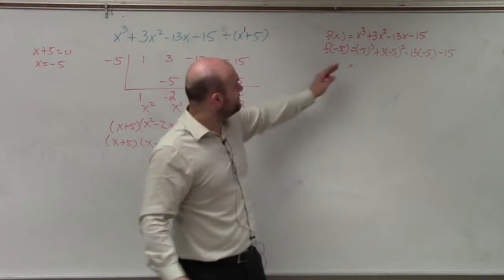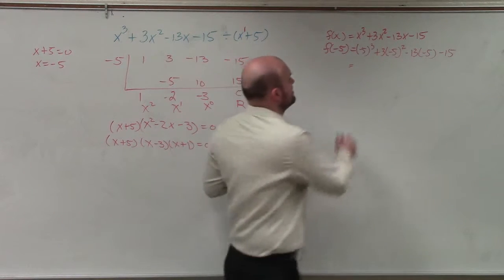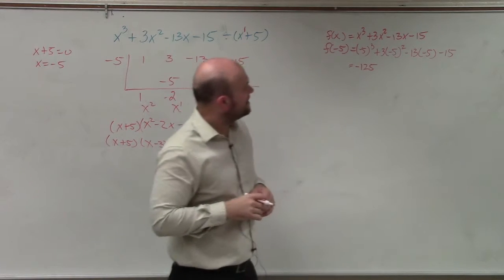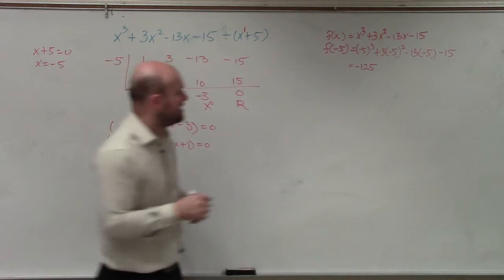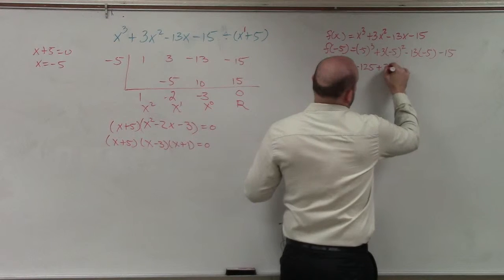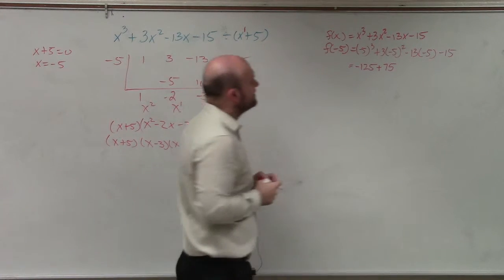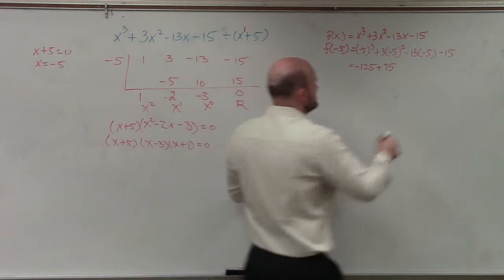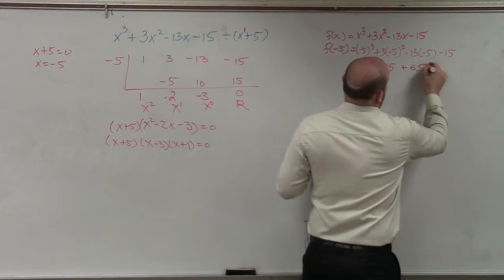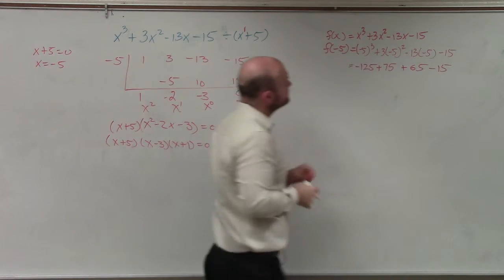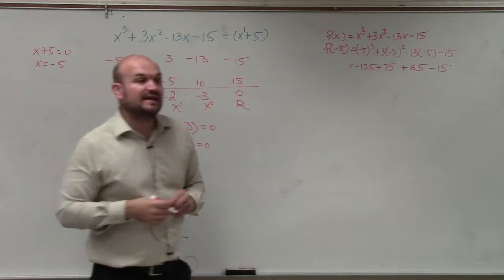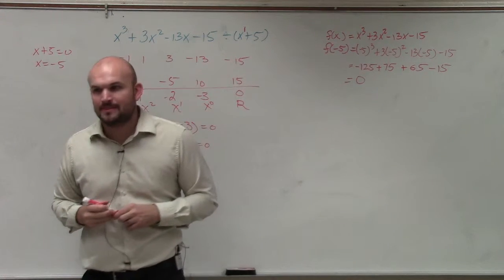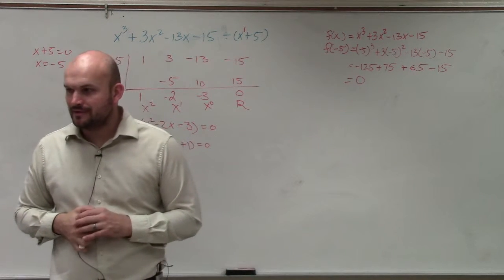So over here, we have negative 5 cubed. That's going to be negative 125. Negative 5 squared is going to be positive 25, so that's plus 75. Negative 5 times 13, that's going to be 65, positive 65. Now, I could have done the work right or incorrect, but I know that the answer should have been 0.